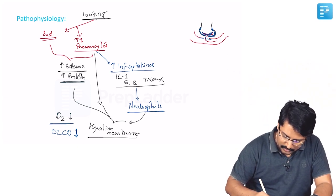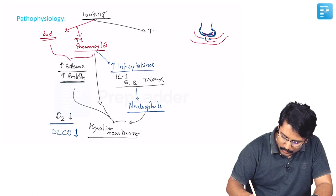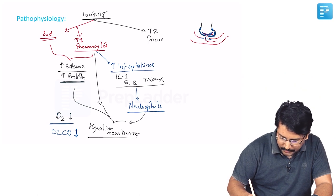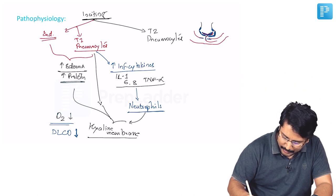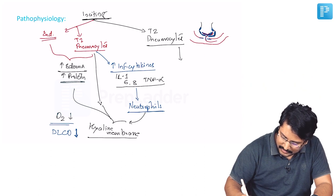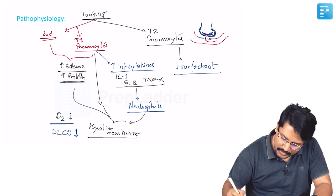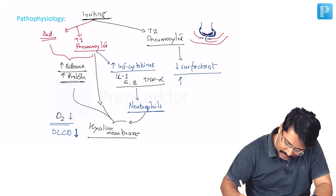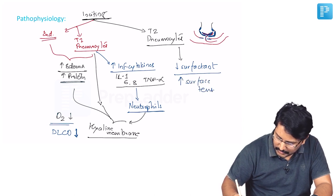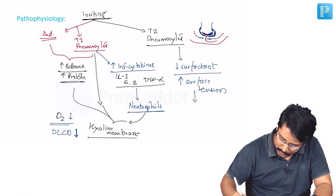Apart from that, the second arm of injury is basically to type 2 pneumocytes. What is the main function of type 2 pneumocytes? Type 2 pneumocytes basically secrete surfactant. So when there is decrease in surfactant production, this leads to increase in the surface tension.